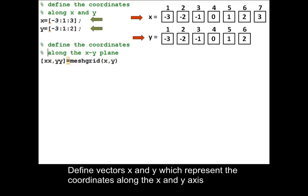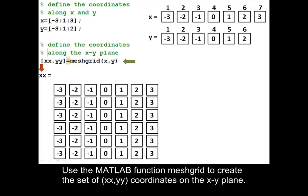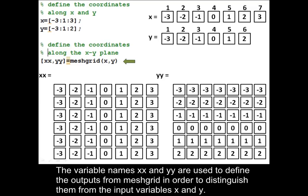Define vectors X and Y which represent the coordinates along the X and Y axis. Use the MATLAB function MeshGrid to create the set of XX, YY coordinates on the X-Y plane. The variable names XX and YY are used to define the outputs from MeshGrid in order to distinguish them from the input variables X and Y.